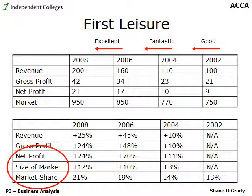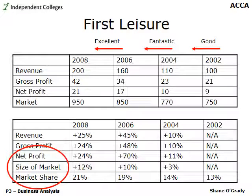The quantitative information about First Leisure provides the basis for several points in the post-acquisition part of your answer. From a quick scan, there was a good increase in results from 2002 to 2004, fantastic increases from 2004 to 2006, and reasonably strong results from 2006 to 2008 — though not as strong as the previous period. The reason: although MMI acquired First Leisure in 2002, they considerably changed their attitude in 2004, transitioning from hands-off portfolio manager to synergy manager.